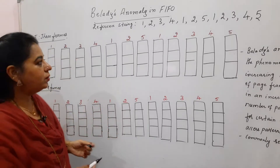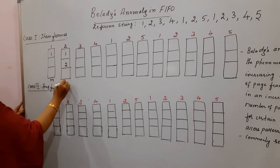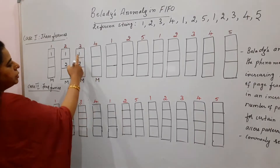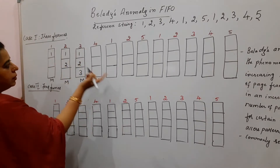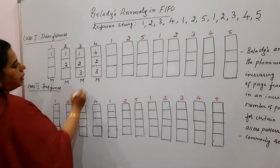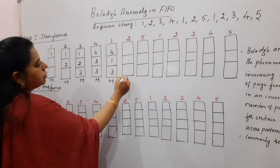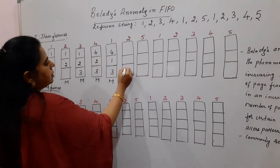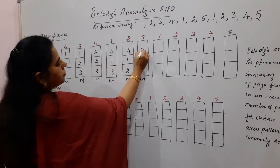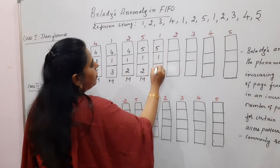Using FIFO with 3 frames: Page 1 is a miss, page 2 is a miss, page 3 is a miss. Page 4 is a miss — replace the oldest page, which is 1, giving frames: 4, 2, 3. Page 1 again is a miss — replace the oldest, which is 2. Page 2 is a miss — replace the oldest, which is 3. Page 3 is a miss — replace the oldest, which is 4. Page 1 is already there — hit.